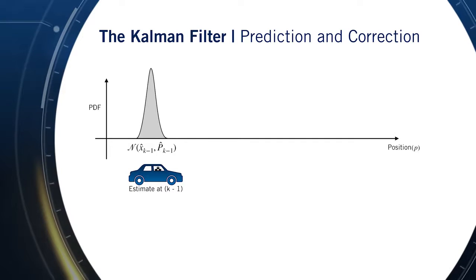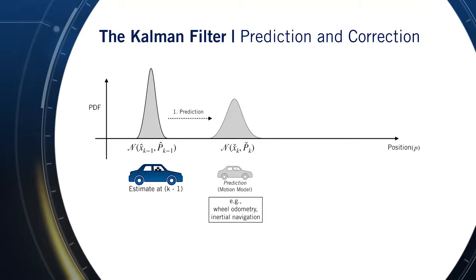To make these ideas more concrete, let's consider a problem of estimating the 1D position of a vehicle. Starting from an initial probabilistic estimate at time k-1, our goal is to use a motion model, which could be derived from wheel odometry or inertial sensor measurements, to predict our new state.